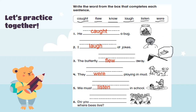The last one: 'Do you ___ where bees live?' I guess you're going to say 'know,' and that's absolutely correct! 'Do you know where bees live?' They live in a hive. Perfect!